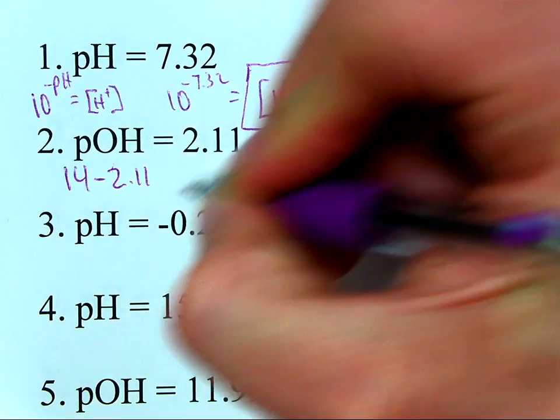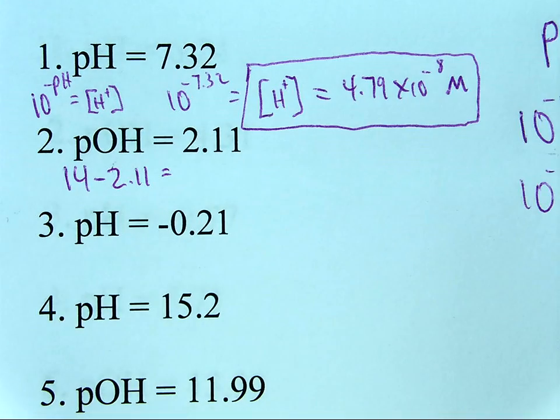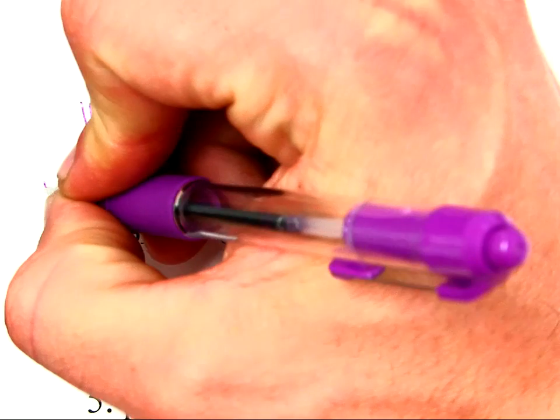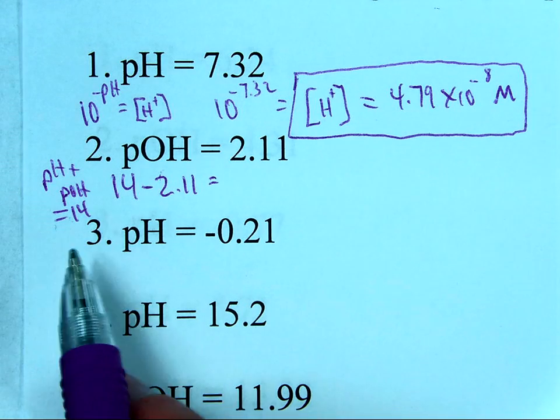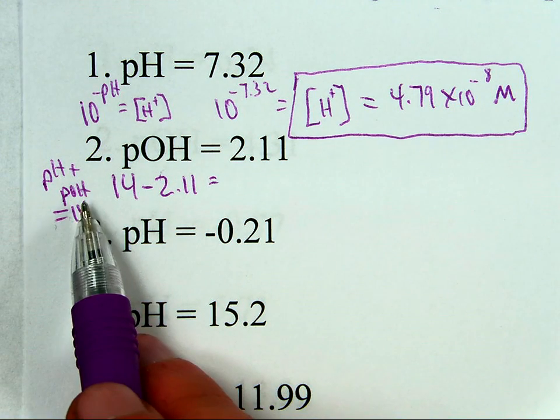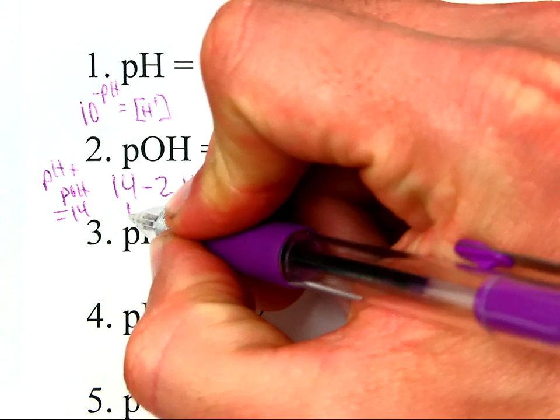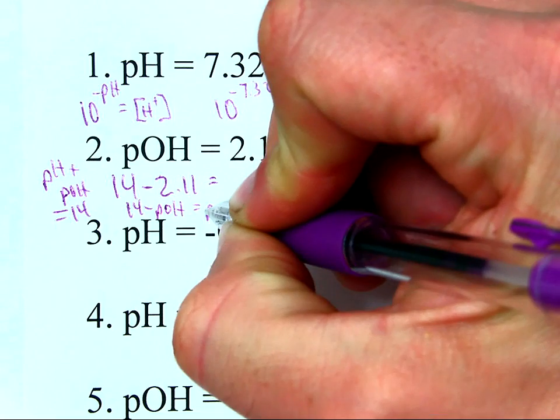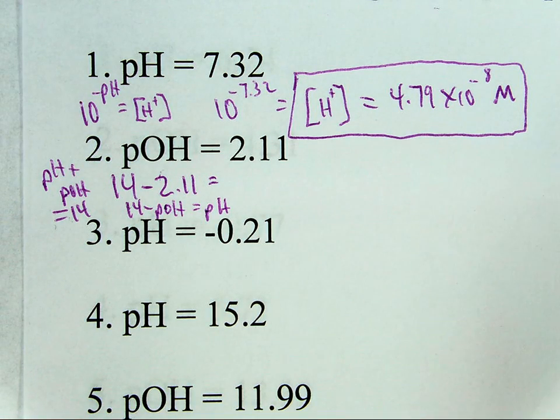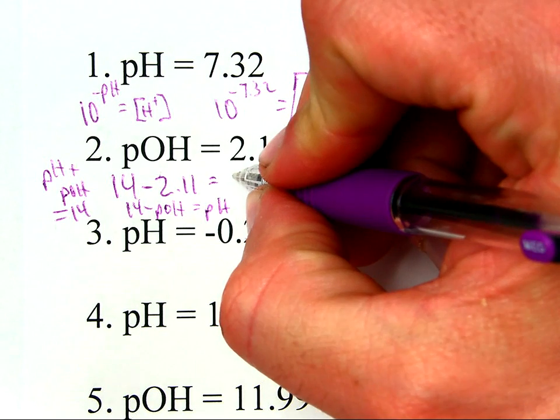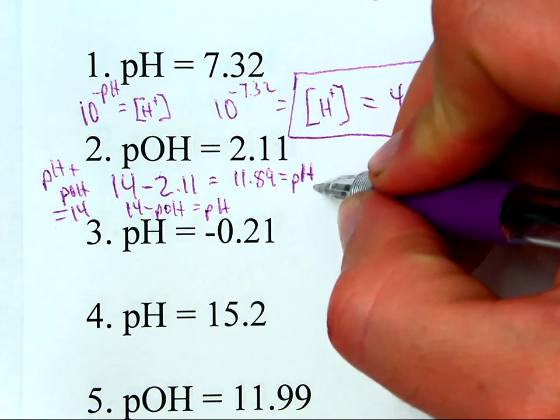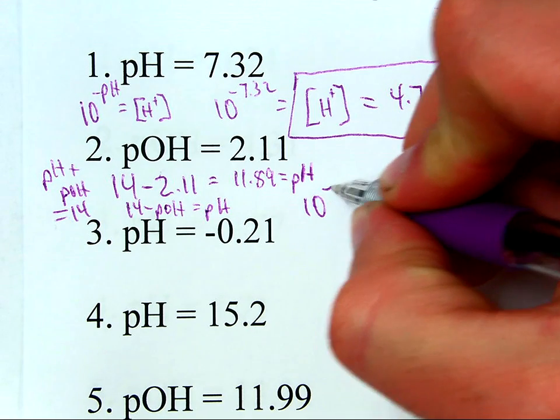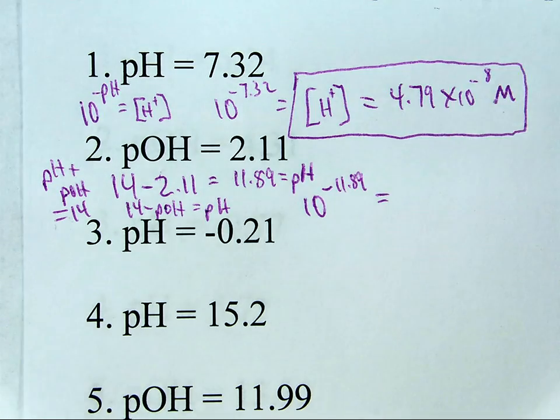So, what we're going to do is turn this into pH. So, 14 minus 2.11 equals pH. And, by the way, what I'm getting at here, just a little reminder, wait, how do I know to do that? That's because pH plus pOH equals 14. So, 14 minus pH equals pOH, 14 minus pOH equals pH. So, 14 minus pOH, 14 minus pOH equals pH. 14 minus 2.11 is 11.89. And, that's the pH. Now, I can do 10 to the negative pH, which means 10 to the negative 11.89. And, that's going to give me the hydrogen ion concentration.